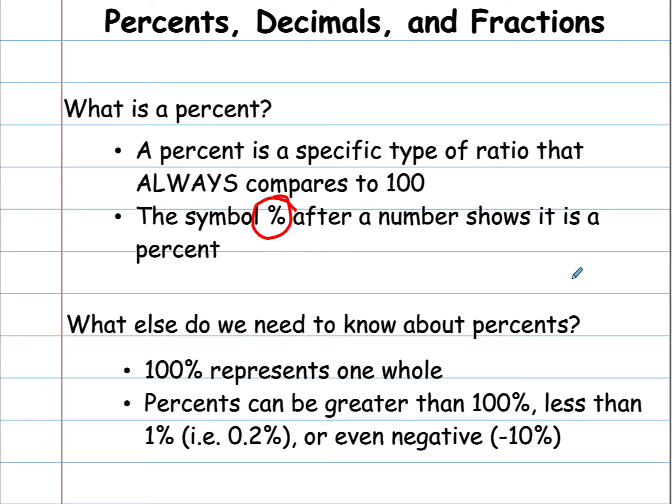But they also could be less than one. So the first number before the decimal point, so this would be two-tenths of a percent. And they even can be negative to show that something decreased in value.